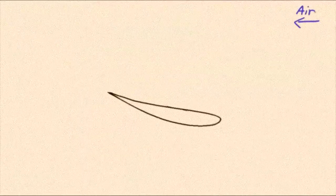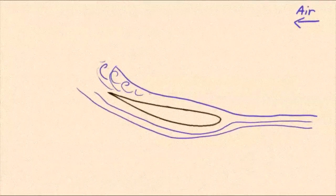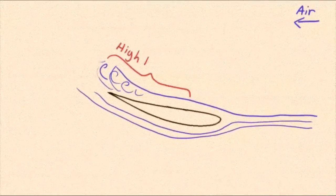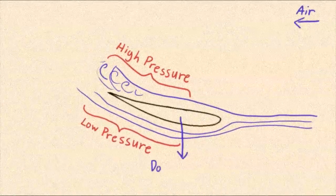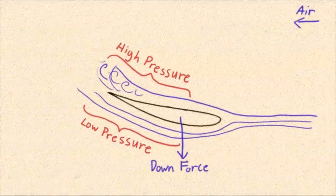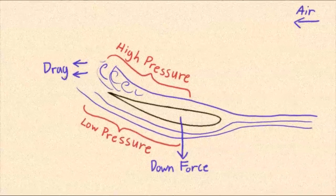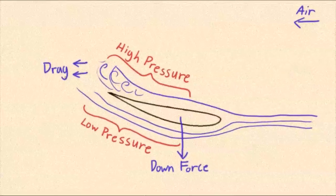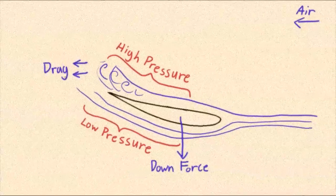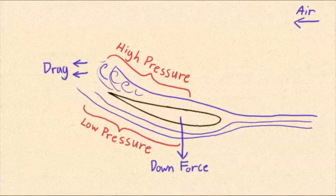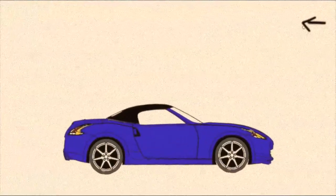Airfoils on cars use the same principle but are flipped upside down. A drag force is still pushing the wing back but the high and low pressure areas have been switched. Thus a downforce is created instead. Minimizing lift on a vehicle is important because it causes the tires to lose traction. Less traction causes bad handling and slower acceleration. Airfoils use a downforce to push the back of the car down. Let's take a closer look at these effects on sports cars.